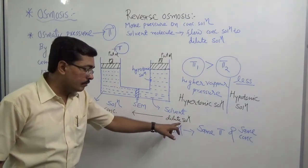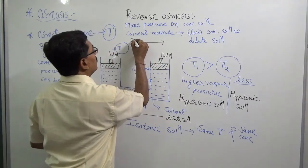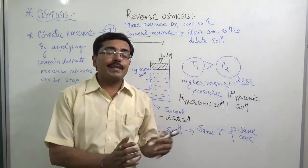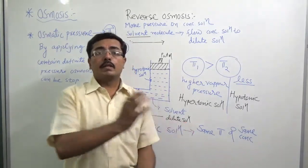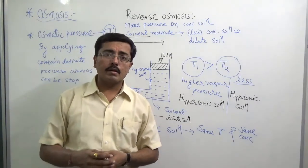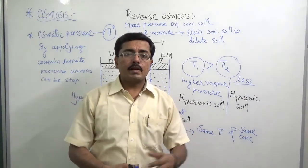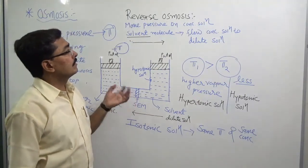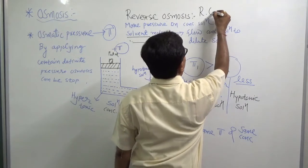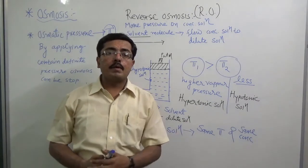In osmosis, solvent molecules flow from concentrated solution to dilute solution — wait, in normal osmosis it is dilute to concentrated. The usefulness of reverse osmosis is observed in countries like Israel, where they are converting saline water into potable drinking water to overcome their day-to-day water demands. RO plants apply reverse osmosis phenomena using cellulose diacetate or cellulose acetate membranes.